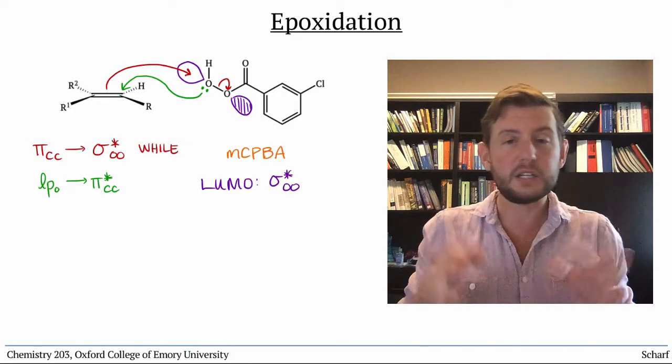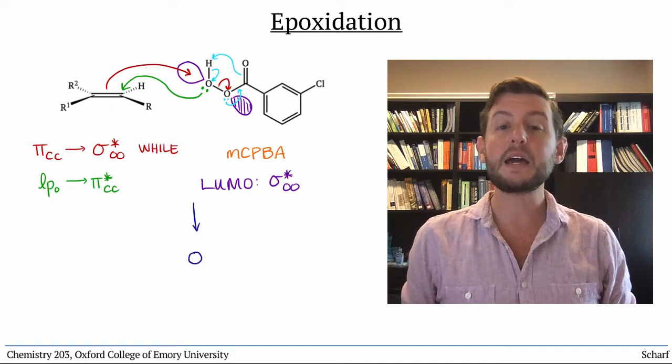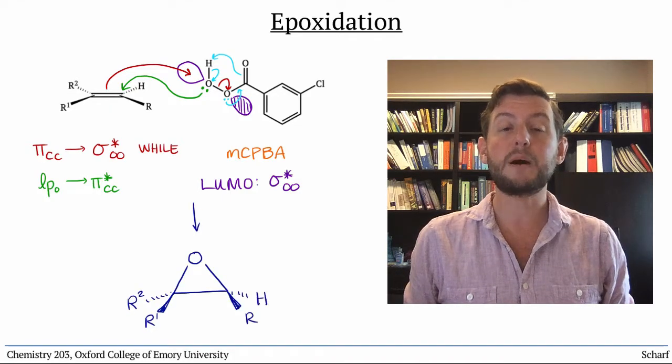Unfortunately, there's some additional juggling of electrons that happens here, but the net result is that we make a new three-membered ring called an epoxide.